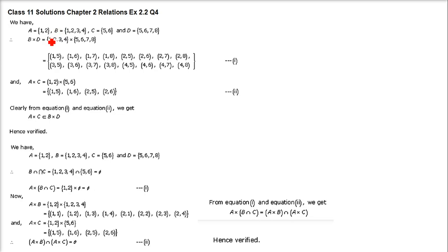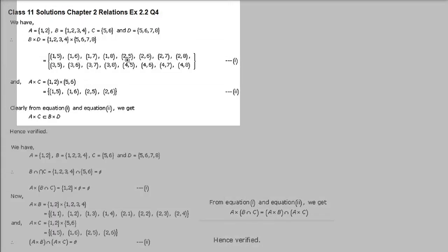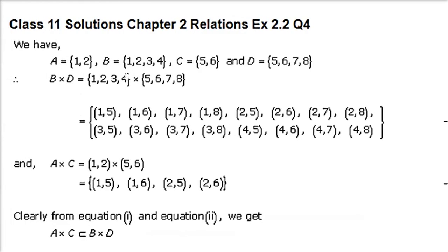Next: A is {1,2}, B is {1,2,3,4}, C is {5,6}, D is {5,6,7,8}. We have to show that A cross C is a subset of B cross D. Let us find B cross D first: (1,5),(1,6),(1,7),(1,8), (2,5),(2,6),(2,7),(2,8), (3,5),(3,6),(3,7),(3,8), (4,5),(4,6),(4,7),(4,8). So 4 times 4 = 16 ordered pairs.